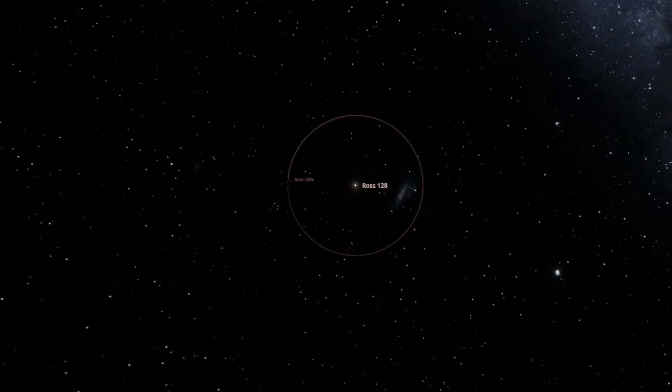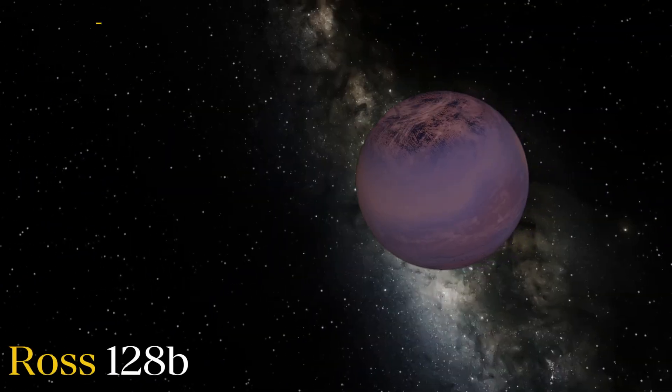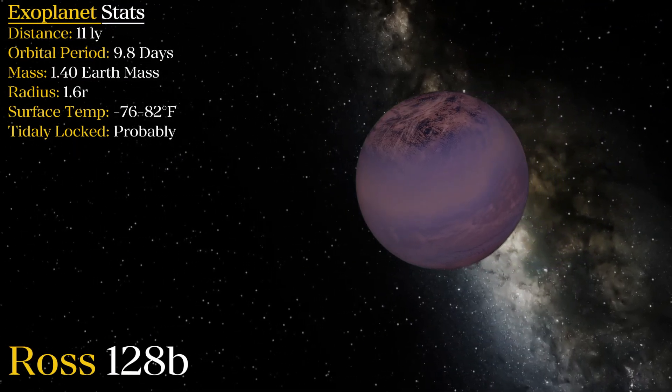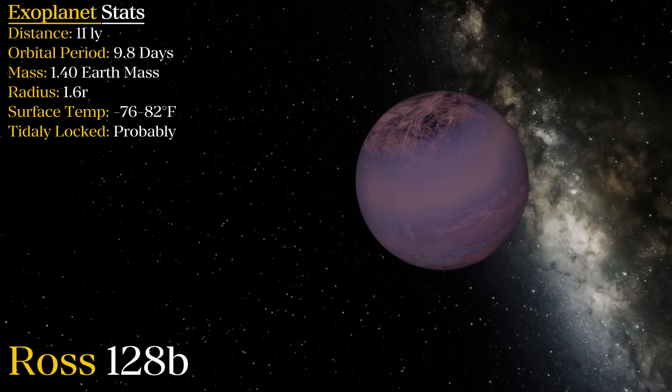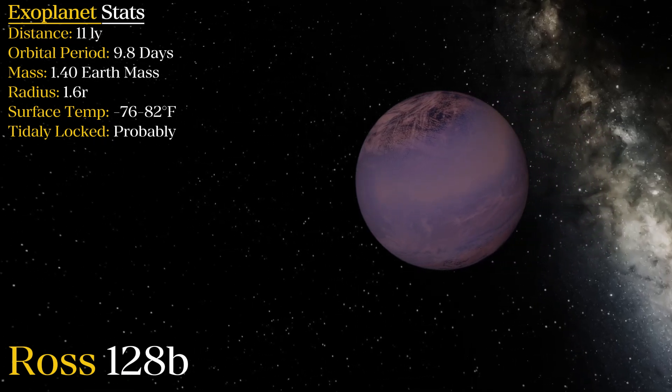Ross 128b is a rocky world orbiting within the habitable zone of its parent star. Similar to Proxima Centauri b, it is a mere 11 light years away from Earth and may have potential to visit this world with advances in rocket propulsion.